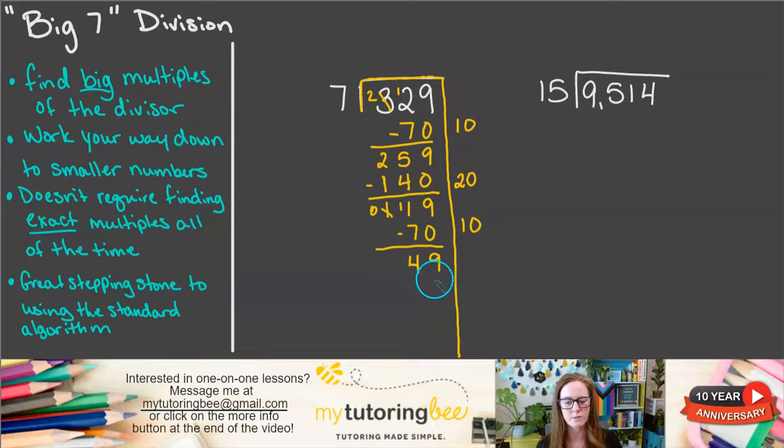All right, so now we're down to 49. I might know that 49 is a multiple of 7. However, if I don't know that, then that's okay. We can just keep using numbers that we do know until we get to 0 or something that is smaller than 7. Let's say I don't know that 49 is a multiple of 7, but I do know what 5 times 7 is. So I'm going to take out 5 groups of 7. 5 times 7 is 35. So I'm going to take that away. 9 minus 5 is 4, 4 minus 3 is 1.